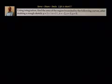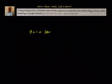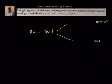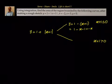Now what about y equals to 1 plus absolute value of x plus 1? To understand how the rough sketch of this line will look, we note that it gives two straight lines: one for x plus 1 less than or equal to 0, and another for x plus 1 greater than 0. When x plus 1 is less than or equal to 0, absolute value of x plus 1 becomes minus of x plus 1, so y equals 1 minus x minus 1, which is y equals to minus x.